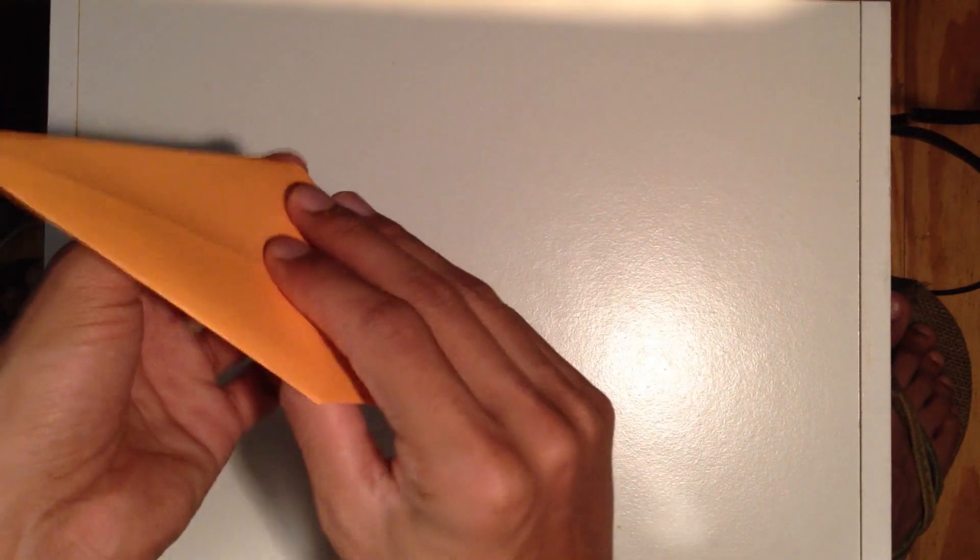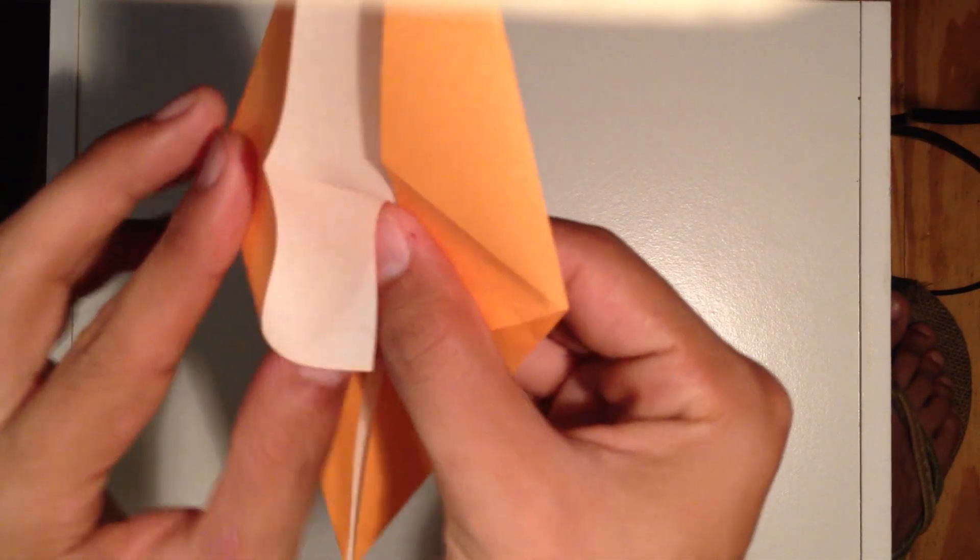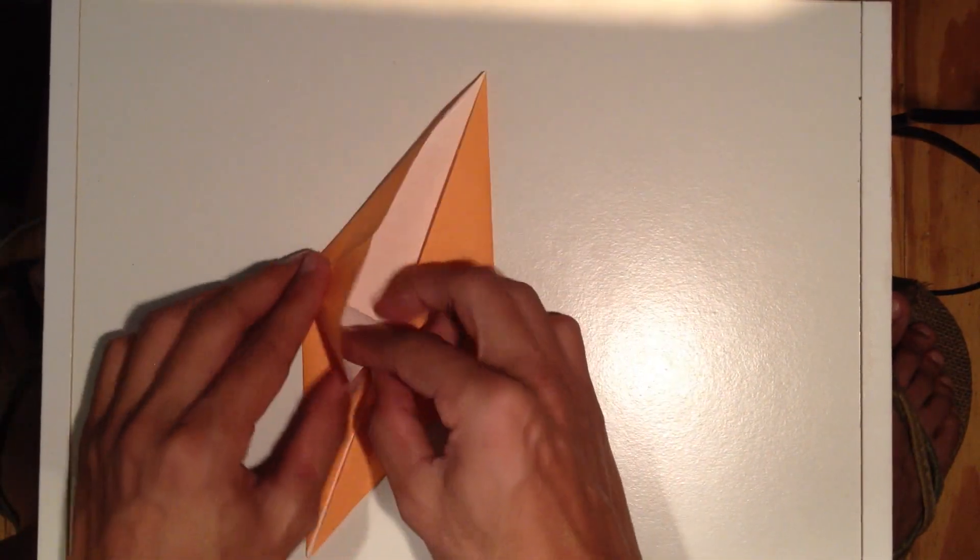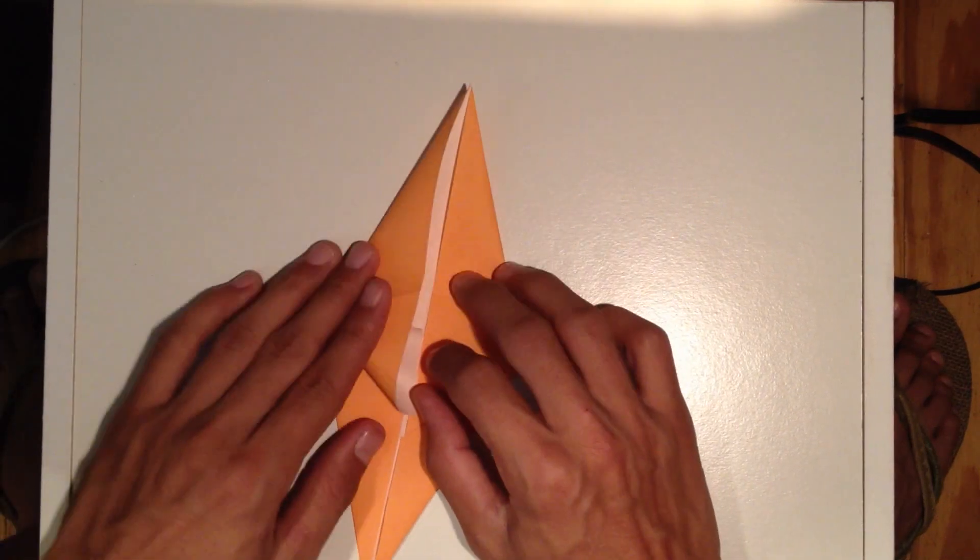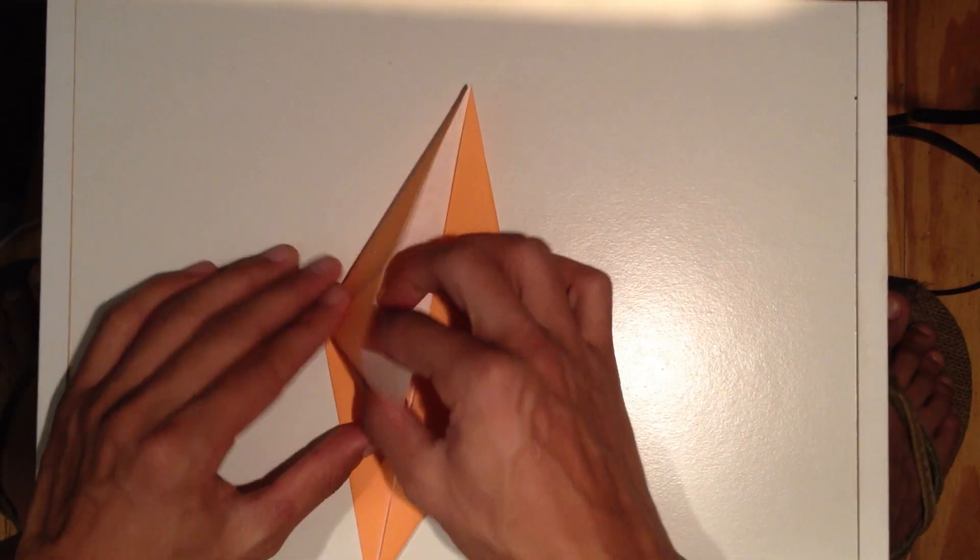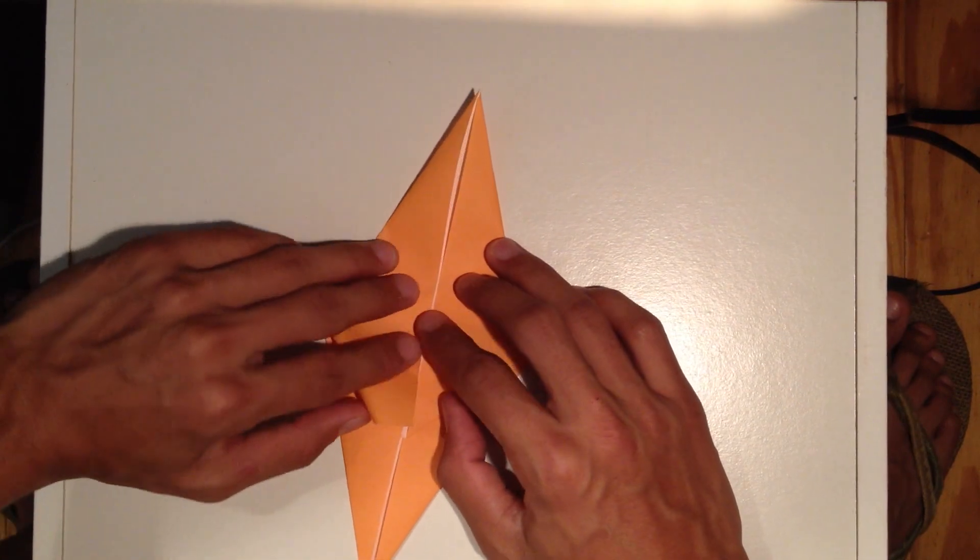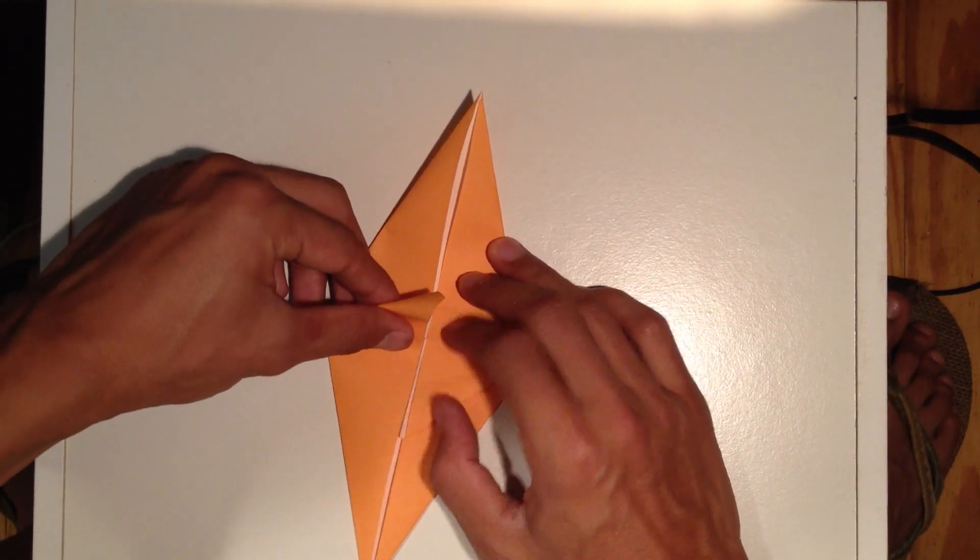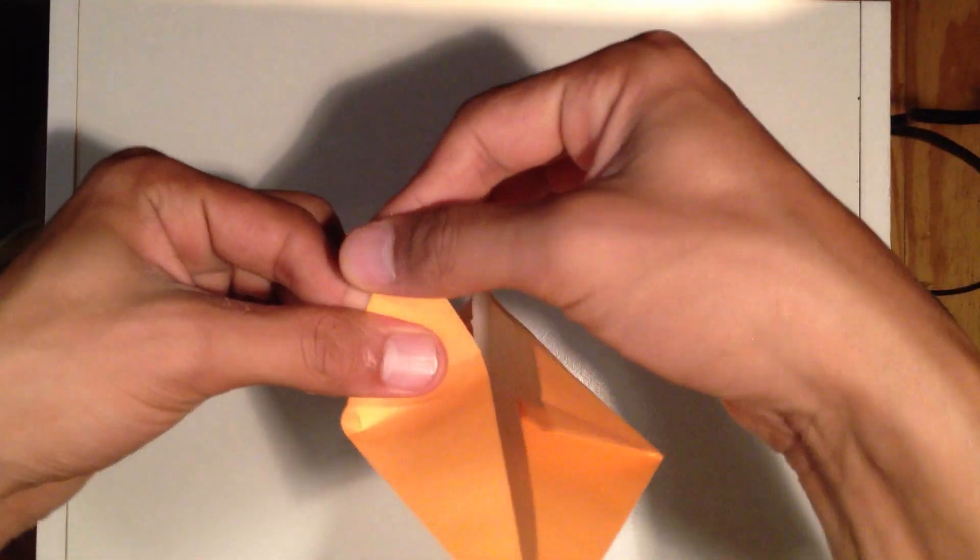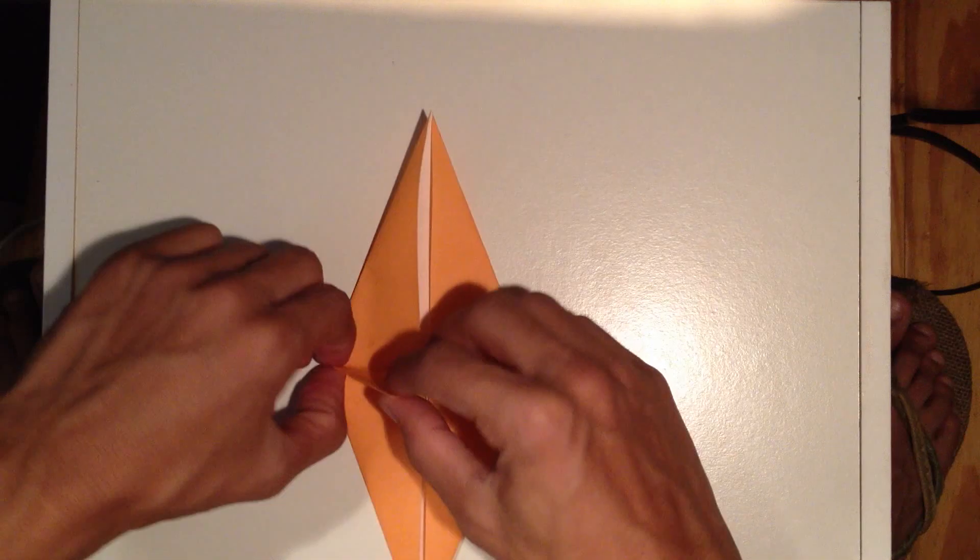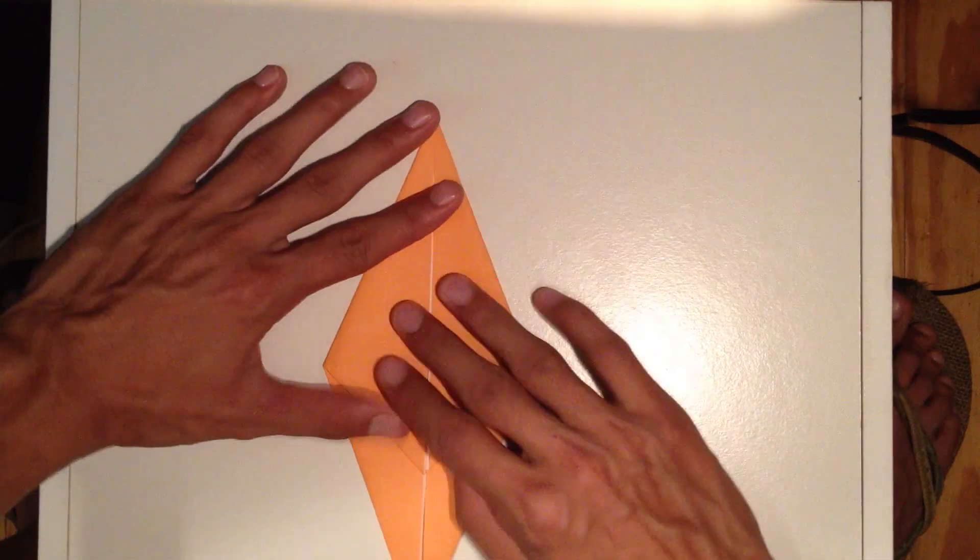Now the important thing is to get this bottom part of the flap pretty symmetrical, and then that should just fold down.